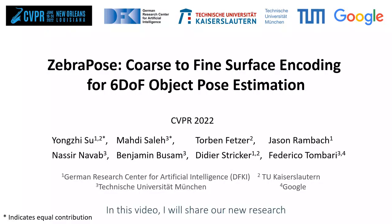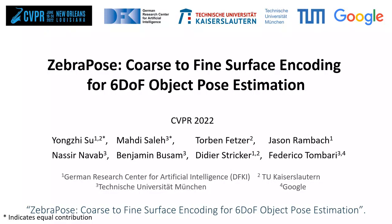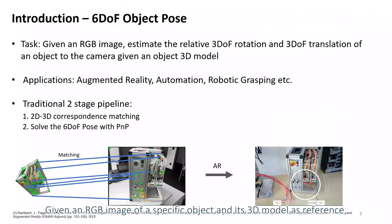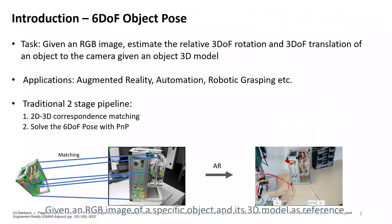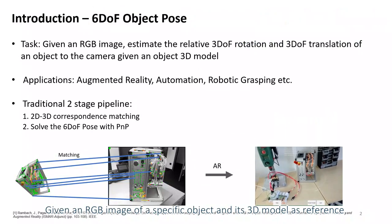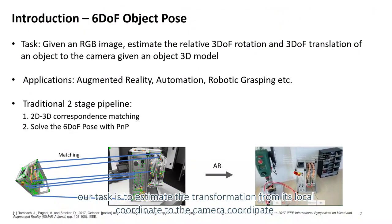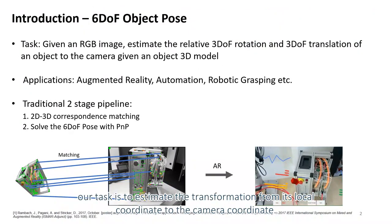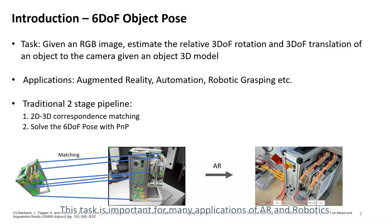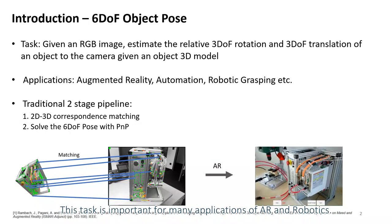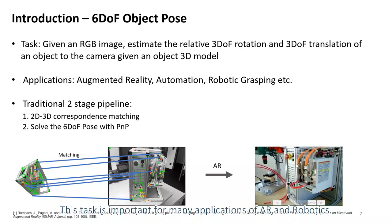In this video, I will share our new research: Zebra Pose, a coarse-to-fine surface encoding for 6 degrees of freedom object pose estimation. Given an RGB image of a specific object and its 3D model as reference, our task is to estimate the transformation from its local coordinate to the camera coordinate. This task is important for many applications of augmented reality and robotics.